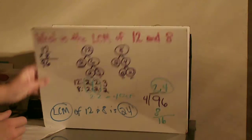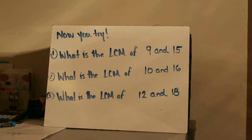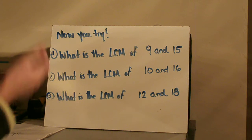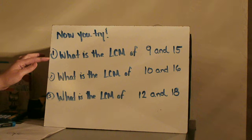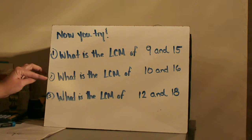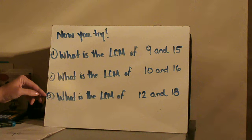Using this method, now you try. There are three problems and I would suggest you stop the video. On a separate sheet of paper, do step one, step two, and step three to find your LCM, and then resume play on the video to see the answers. Number one: what is the LCM of 9 and 15? Number two: what is the LCM of 10 and 16? Number three: what is the LCM of 12 and 18? Please pause the video and work with Method B in determining the least common multiple.